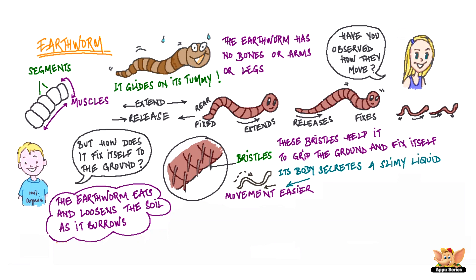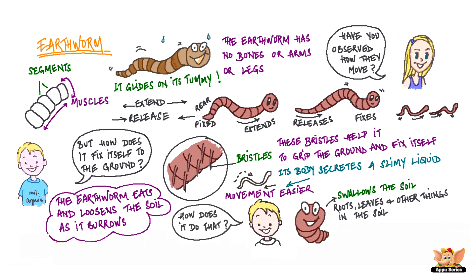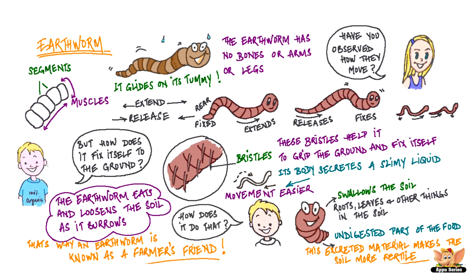And you know the earthworm eats and loosens the soil as it burrows. How does it do that? It swallows the soil and takes its nutrition from tiny parts of decaying roots, leaves and other things in the soil. The undigested part of the food that it takes from the soil is excreted or thrown out. This excreted material makes the soil more fertile. That's why an earthworm is also known as a farmer's friend.